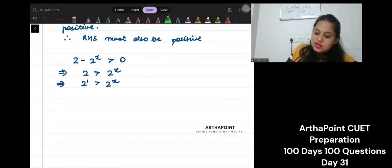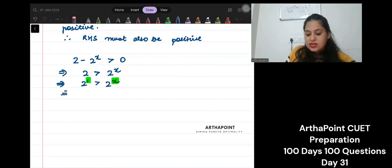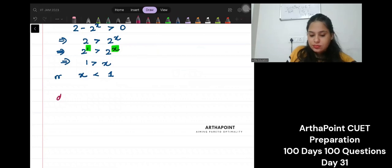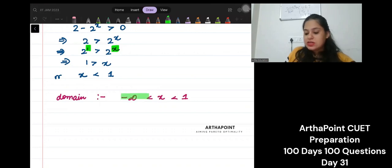If I just compare this and this, what do I get? This implies 1 is greater than x or x is less than 1. What will your domain be? Your domain will be x is between minus infinity to 1. This is going to be your domain. Is this clear to you?